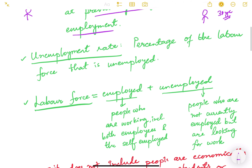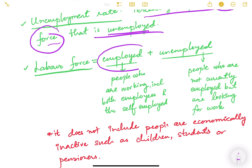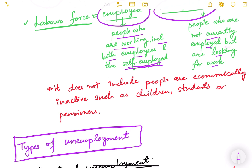The unemployment rate is basically the percentage of the labor force that is unemployed — not the percentage of the total population. The labor force is employed plus unemployed people. Employed people include employees and the self-employed earning money on a regular basis. Unemployed are those not currently employed but actively looking for work. Together, these two groups form the labor force.